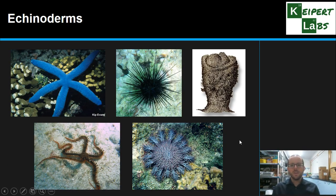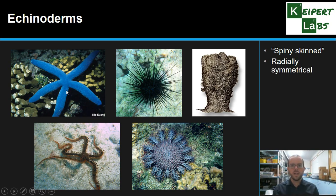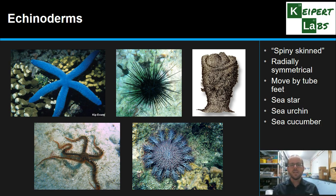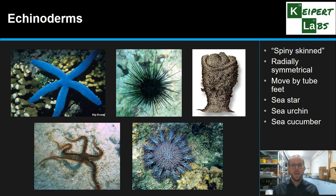Then we come to echinoderms, which stands for spiny skin — from the same root as echidna, this idea of spiny, and 'derm' meaning skin. Things like sea stars, sea urchins, and sea cucumbers are echinoderms. They are radially symmetrical, with a similar centre point and symmetry moving outward to the edges. They also have tube feet, which is how they move around or attach. This is a crown of thorns starfish, a sea cucumber, and another type of sea star.